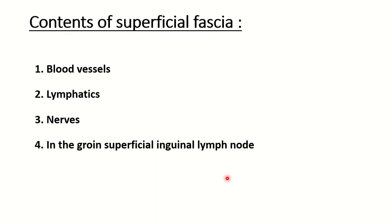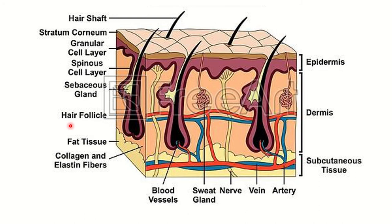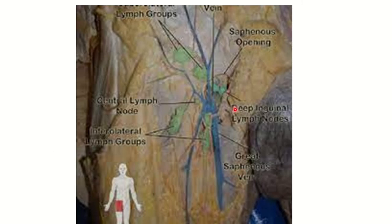The contents of the superficial fascia include blood vessels, lymphatics, nerves, and in the groin, the superficial inguinal lymph nodes. This is the epidermis, this is the dermis, and this is the superficial fascia containing the blood vessels and nerves. The inguinal region contains the inguinal lymph nodes.